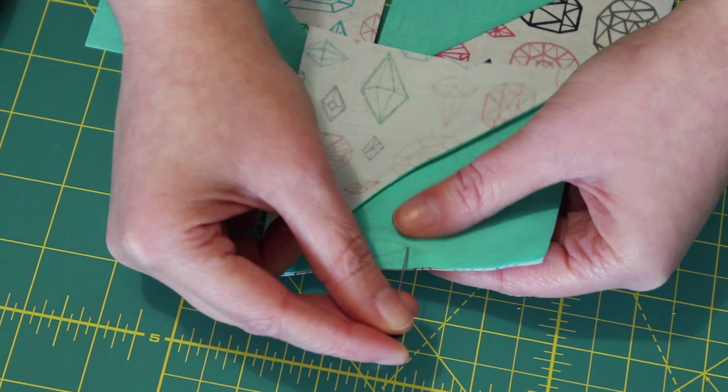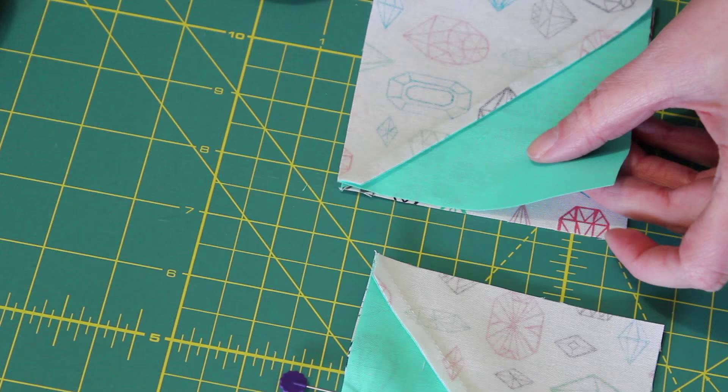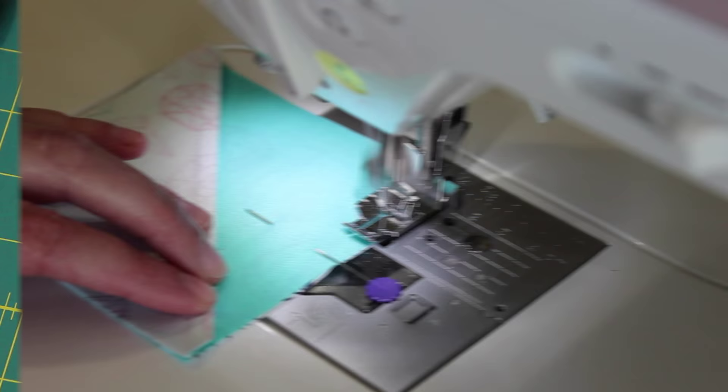Do the same with the other pair of half square triangles by nesting the centre seams and then pinning them together. Sew a quarter inch seam along one edge and then on the other after carefully chain stitching it through.